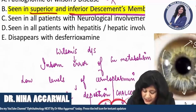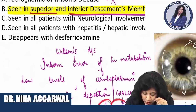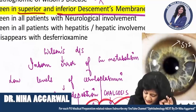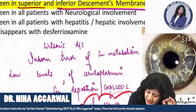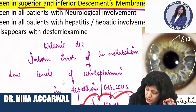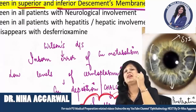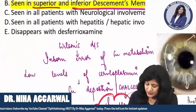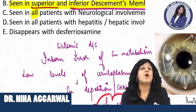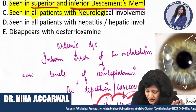Option C says it is seen in all patients with neurological involvement. If you go by standard textbooks, data varies, but approximately the range is: in neurological involvement it is 95 to 100%. Those people who are having the KF ring — practically all, 95 to 100% of the patients with neurological involvement — will also show the KF ring. So since it is 95 to 100%, I think we can go with 'all' — this is also the right option.